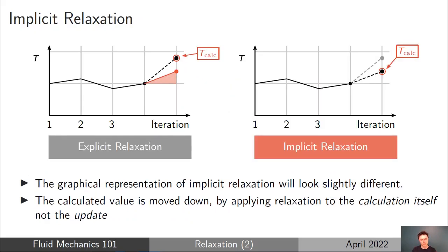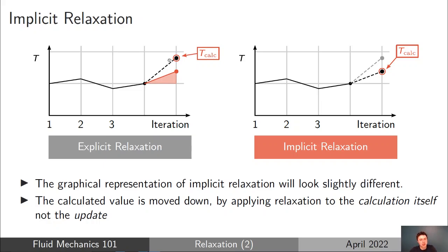For a graphical comparison of explicit versus implicit relaxation: on the left, with explicit relaxation, we calculate T calc by solving the matrix equation, then take the update and apply a fraction of it — instead of moving along the dotted line, we move along the red line. But with implicit relaxation, we're actually changing the value of T calc itself, moving that calculated value down so we go directly to it with relaxation already applied.